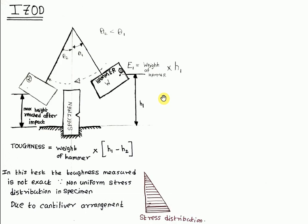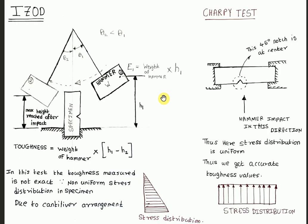In case of Charpy test, the specimen is held like a simply supported beam and a 45 degree notch at the center is provided in this direction. The hammer hits the specimen and due to the uniform stress distribution, we get an accurate toughness value.